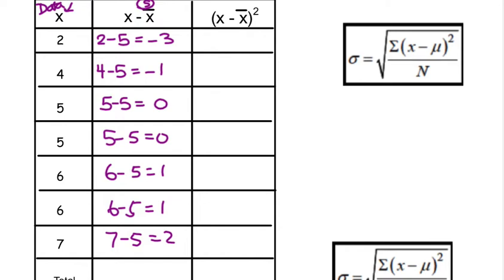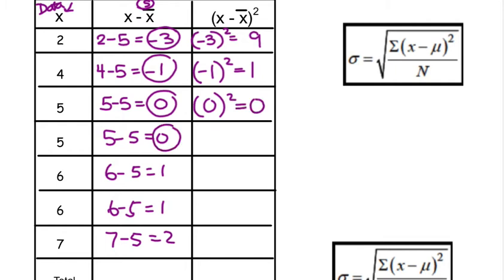Now the third column is we're going to square these numbers. So we're going to take negative 3 and square it. Negative 3 times negative 3 is 9. Then negative 1 times negative 1 is 1. Then we're going to take 0 squared is 0. 0 squared is 0.